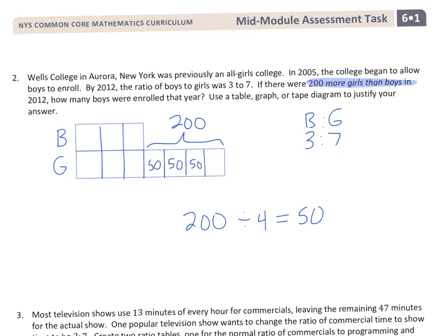So if I had 200 divided by 4, wouldn't that be 50? So each of these blocks is 50. And therefore, what is every other box? Yep, they're all equal, so they have to be 50 as well. So on top, I've got three 50s. So my boys is 150, if I had 200 more girls than boys.